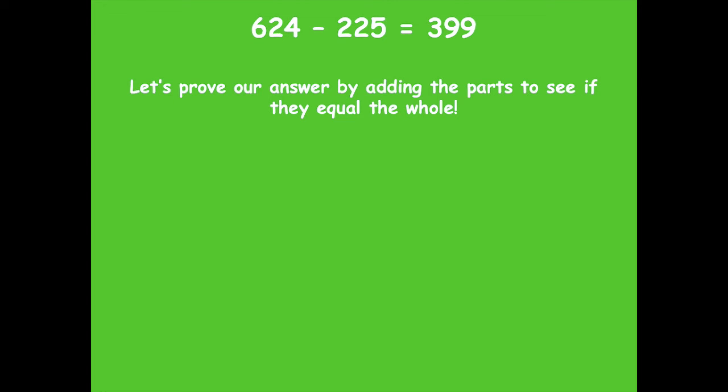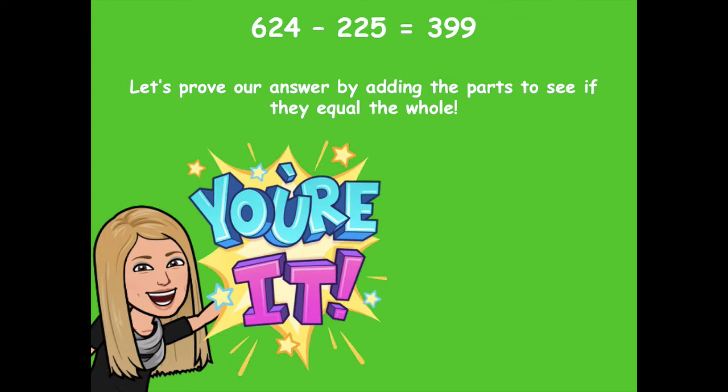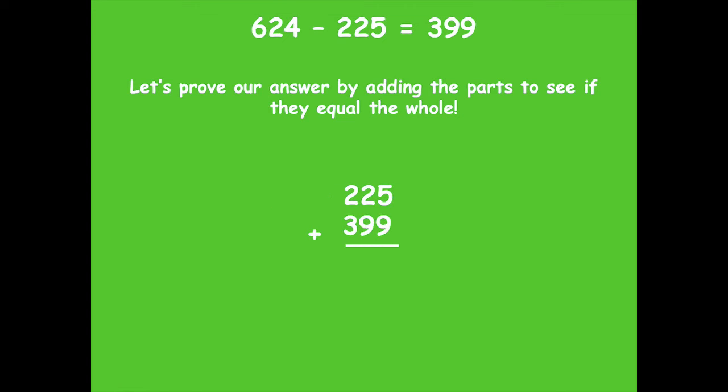You guys got to prove your answer though. You've got to prove it to make sure that it's right by adding those two parts to see if they equal the whole. So pause the video, add your two parts, and see if they equal the whole. Then click play when you're ready to go over it together. Pause if you need more time. Otherwise, here's how I would do it. Let's start with the ones place. Nine plus five is 14. So that's one ten, four ones. Move over to the tens place. And you add those together and you get 12, which would be 100 and two tens. Then I add my hundreds place, which would give me six. So 624 does equal 624.